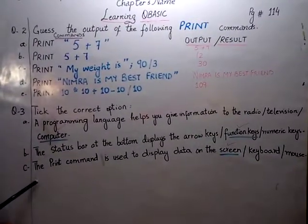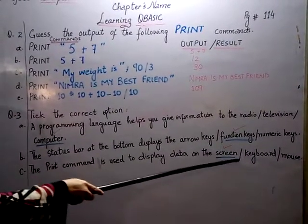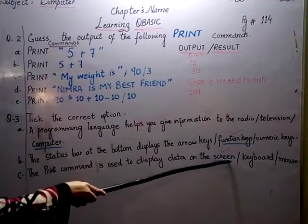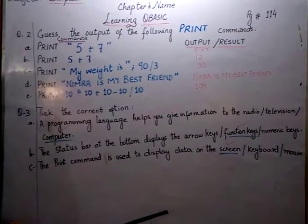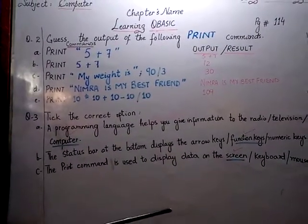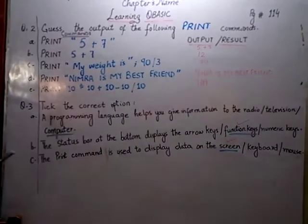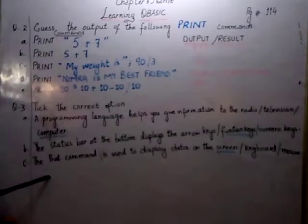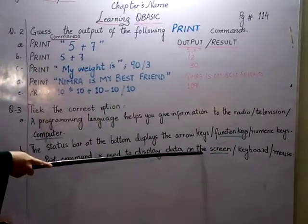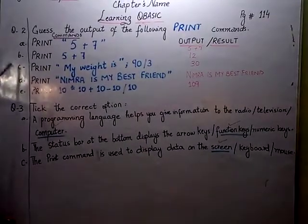Third option is the print command is used to display data on the keyboard, mouse or screen. Screen is the output device. That's why it will be the correct answer. Input devices are keyboard through which we can give instructions to computer that told the computer what to do. And the result will be shown on the screen or monitor of the computer.